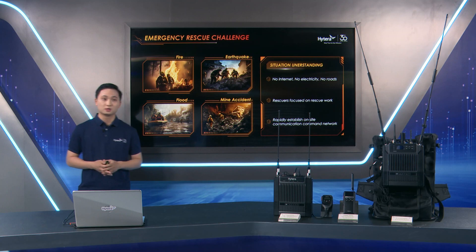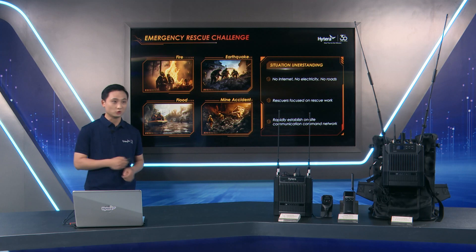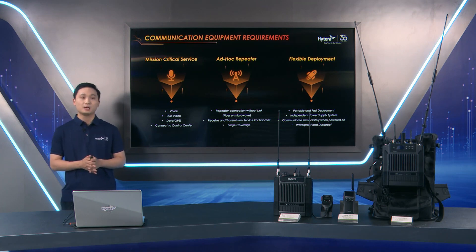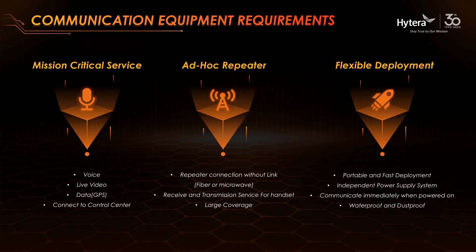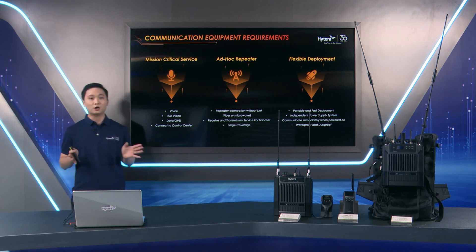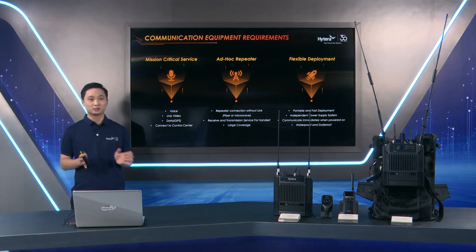After analyzing the problems, what kind of communication devices can we provide? The key point is always voice — it helps disaster relief workers get support in the first instance, and can save lives at critical moments so the command center can receive voice messages and understand the situation in time, plus video and data services. The first device that comes to mind may be a repeater. However, according to previous analysis, this repeater cannot be connected using microwave or optical fiber, because disaster relief workers can't carry all those cables and accessories everywhere. So the best option is an ad-hoc repeater without any wire link, supporting large coverage to help expand the search and rescue area.